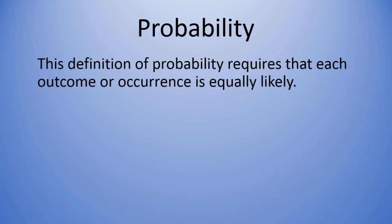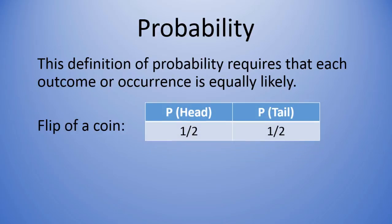Now, this definition of probability requires that each outcome or occurrence is equally likely. So, for example, with our flip of a coin example, the probability of getting a head, which is one-half, is the exact same as the probability of getting a tail. So, those two outcomes, or our occurrences, or events, are equally likely.